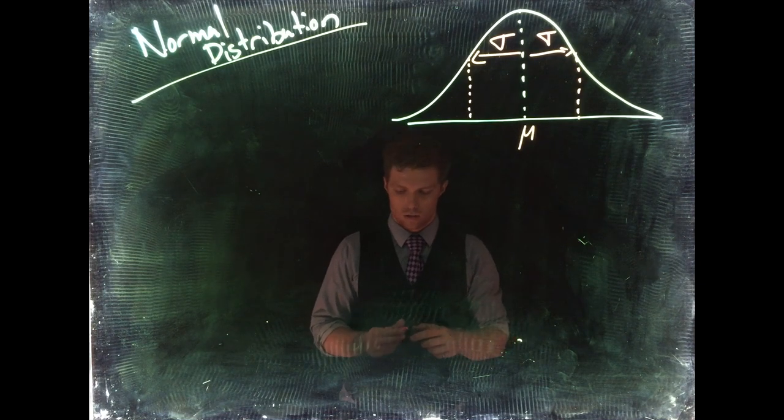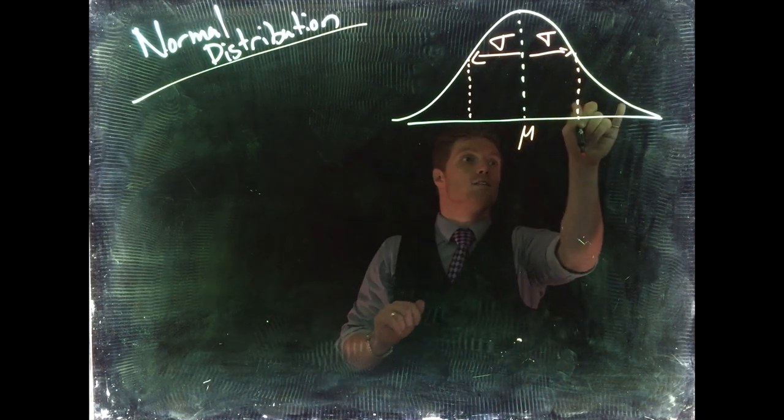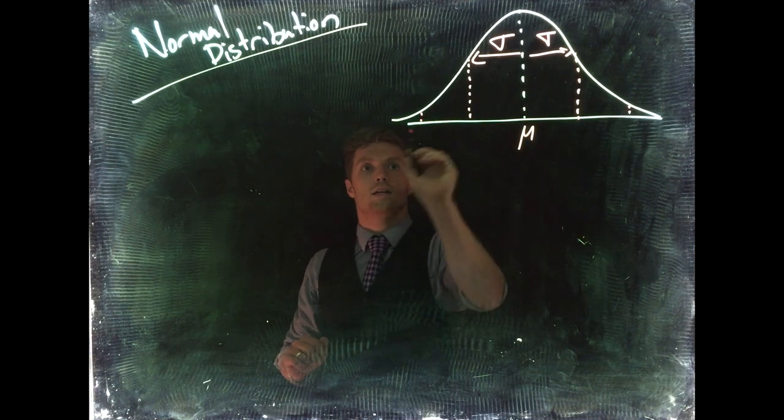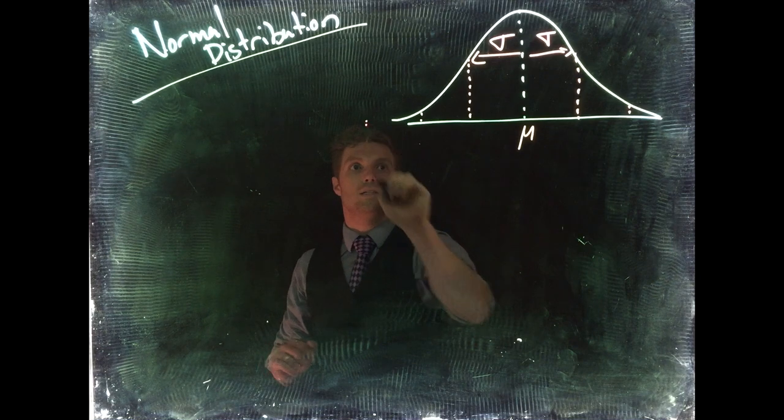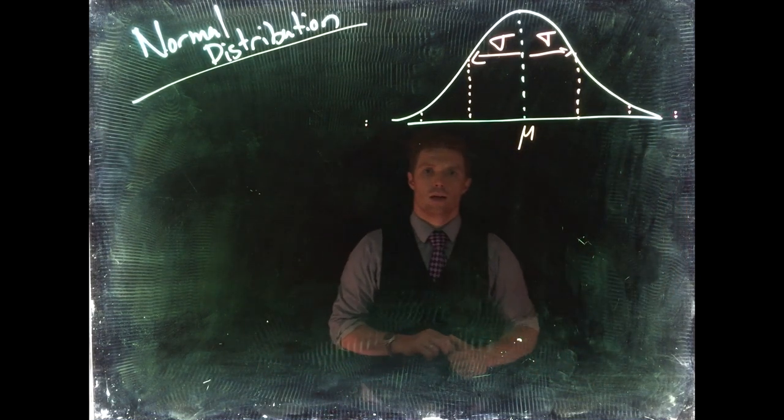That is one standard deviation away from the mean, either above or below. Now that I know how big the standard deviation is, I can take it in steps. So there's two standard deviations, two standard deviations, go out a little further—three standard deviations and three standard deviations.